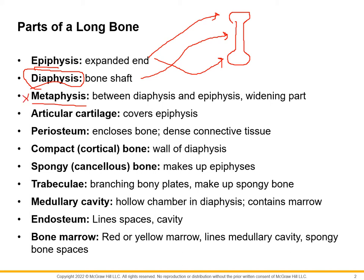The epiphysis and the diaphysis are the two areas I definitely want you to know. The epiphyses are going to be covered with what is called articular cartilage. Articular simply means joint-related — the scientific name for a joint is an articulation. Articular cartilage is a type of hyaline cartilage, which is the most common type of cartilage in the body.